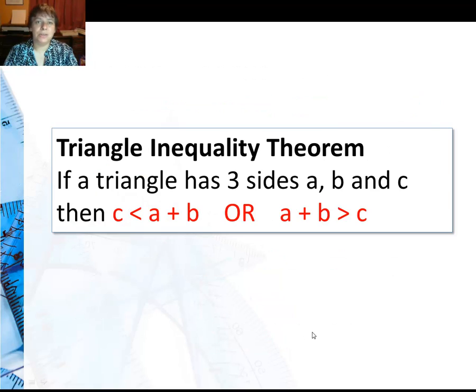And it leads us to the triangle inequality theorem. If a triangle has three sides a, b, and c, then the third side must always be less than the sum of the other two sides. It doesn't matter which side you pick.